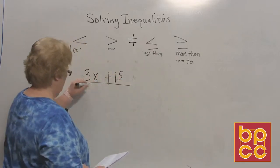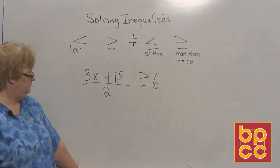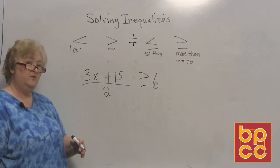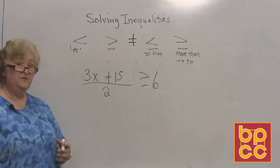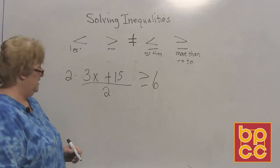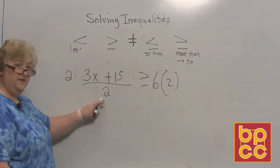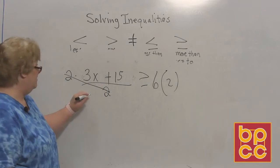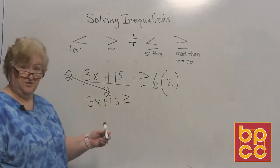Let's try: (3x plus 15) over 2 is greater than or equal to 6. I don't want to deal with denominators, so we can multiply both sides by 2 to get rid of it. Multiply the left side by 2 — the 2's clear out. Then multiply 6 by 2, which is 12. Now we have 3x plus 15 is greater than or equal to 12.